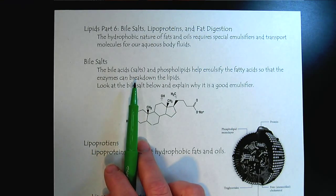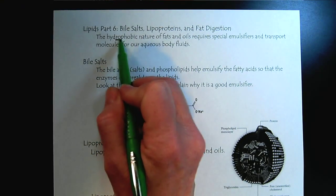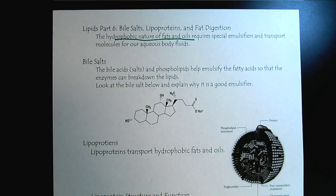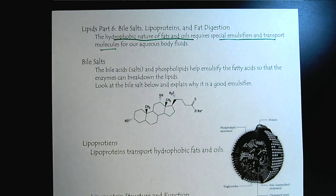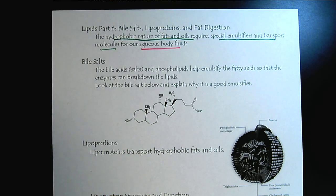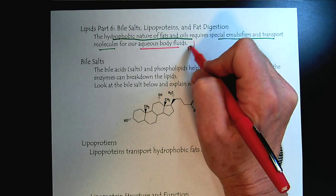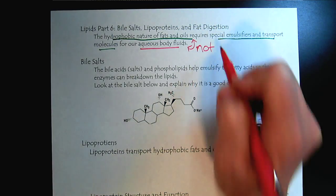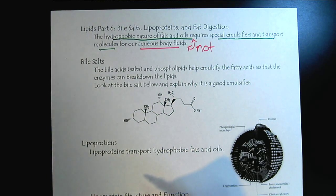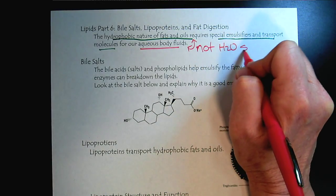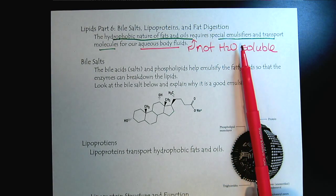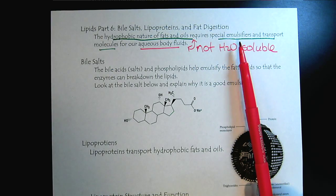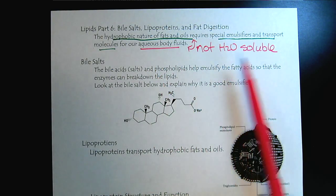So we really want to talk about fat catabolism, but the hydrophobic nature of fats and oils requires some special emulsifiers and transport molecules because they're not soluble in our aqueous bodily fluids. So unlike the proteins, amino acids, and carbohydrates, lipids are not water soluble. Before we can talk about the catabolism of fats and oils, we need to be aware of these special emulsifiers, which are the bile salts, and the lipoproteins, which are the transport molecules.